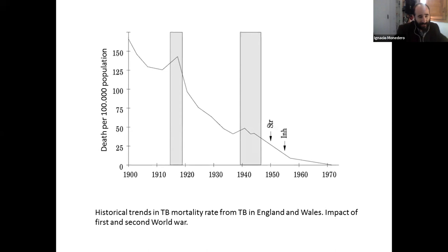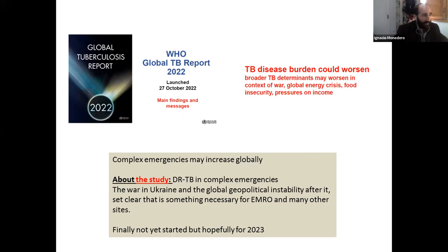This is probably something already happening in countries currently in conflict. WHO made a big echo of these circumstances. During the presentation of the global tuberculosis report from 2022, one of the important issues raised at the very beginning is that the TB disease burden could worsen — not only because of COVID-19, but because of a context of potential global energy crisis and important changes in geopolitics. Complex emergencies may increase globally.